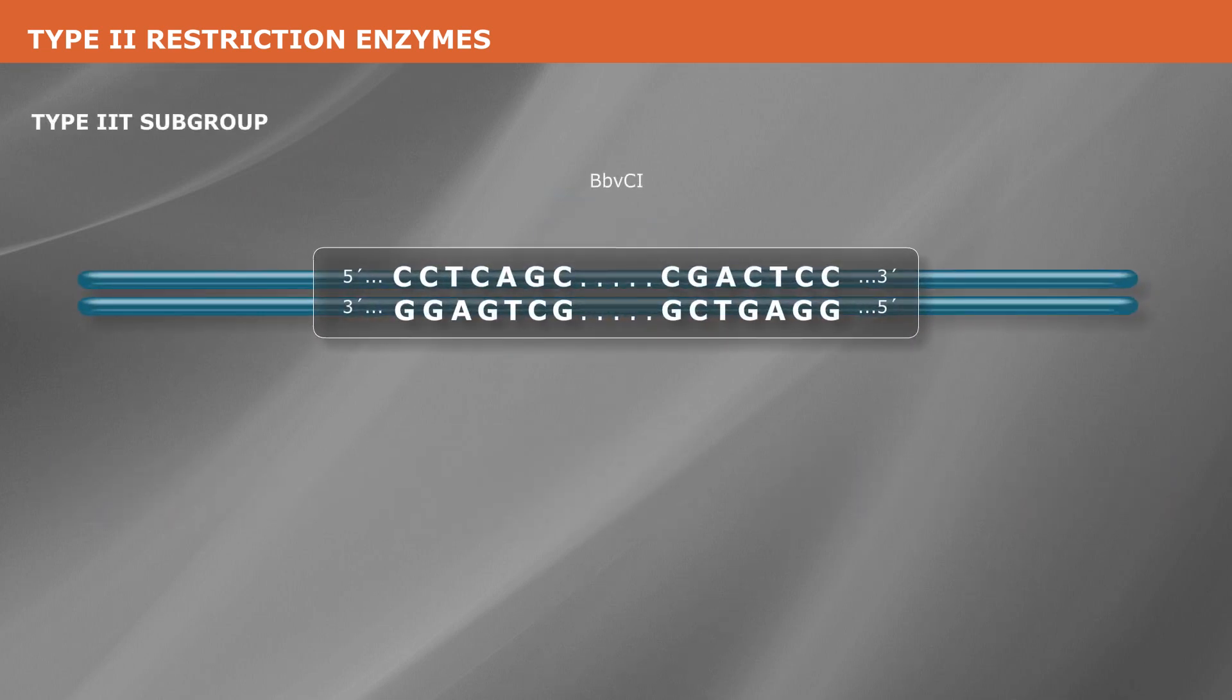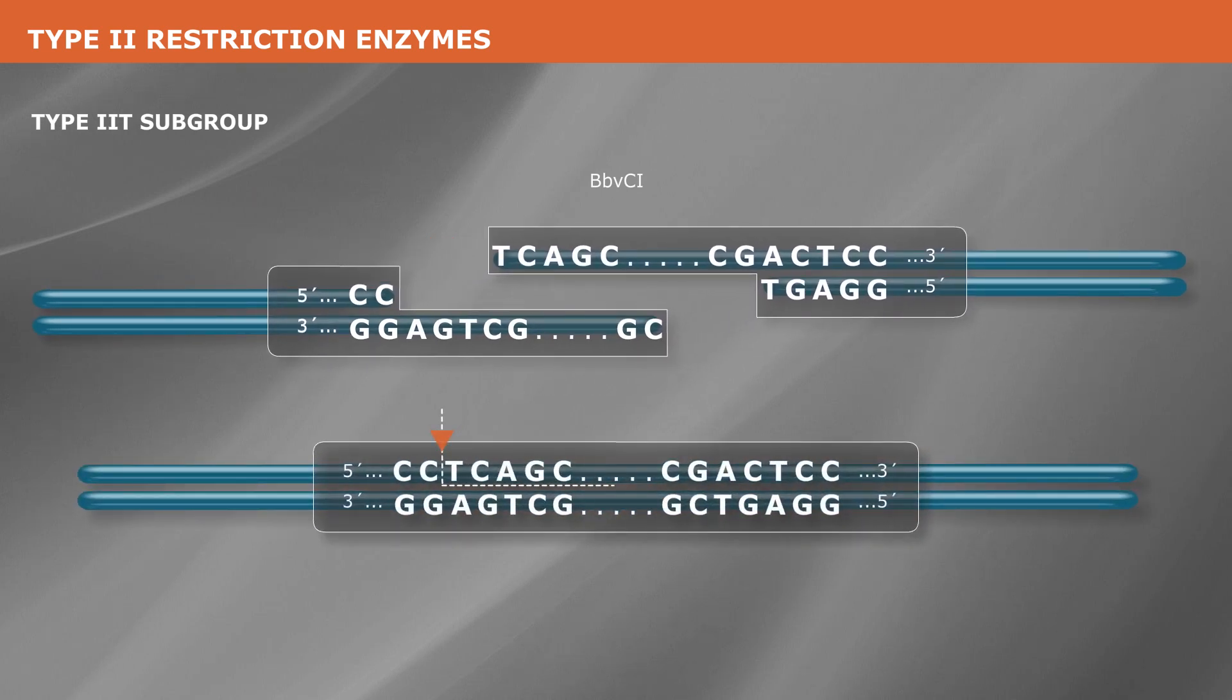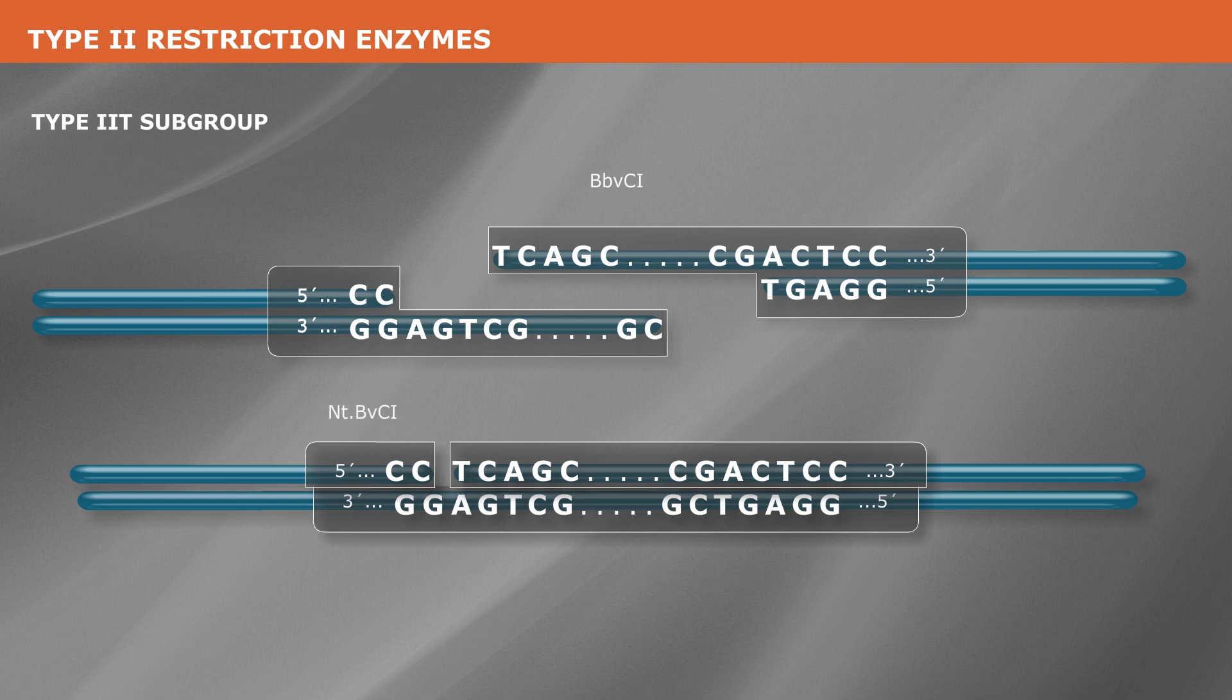Type 2T enzymes, in contrast to the previous three subtypes, use two different catalytic sites for cleavage, each specific for one particular DNA strand. Disruption of either catalytic site results in the creation of a DNA nicking enzyme that cleaves only one DNA strand.